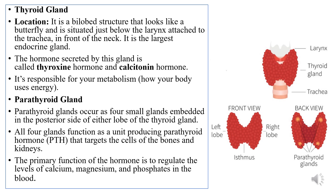The four lobes of the parathyroid gland together produce a hormone called parathyroid hormone, and this hormone functions by targeting the cells of the bones and kidneys. The main primary function of the parathyroid hormone is to regulate the levels of calcium, magnesium, and phosphate in the blood.